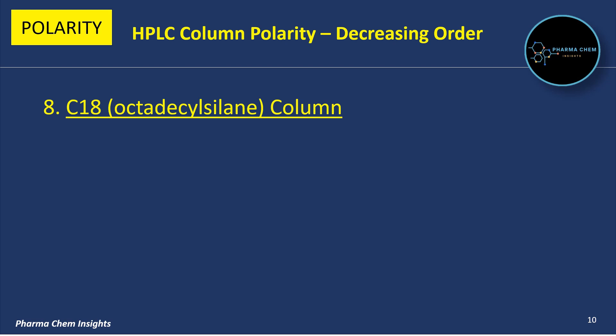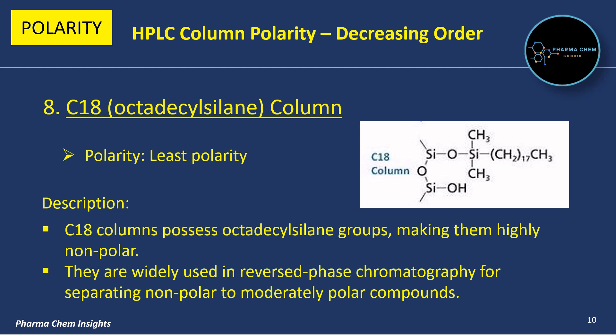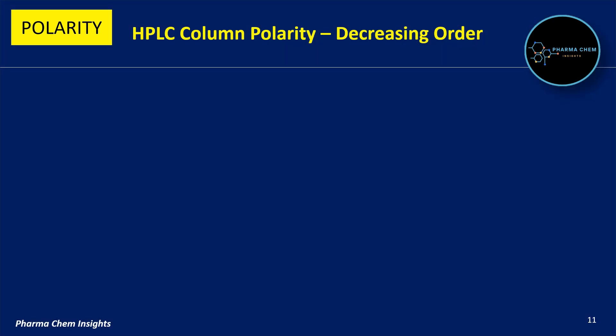Eighth is C18, that is the Octadecylsilane column. Its polarity is least polar or non-polar. C18 columns possess octadecylsilane groups making them highly non-polar. They are widely used in reverse phase chromatography for separating non-polar to moderately polar compounds.